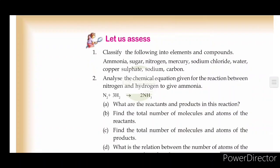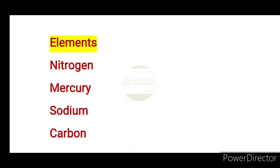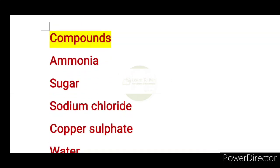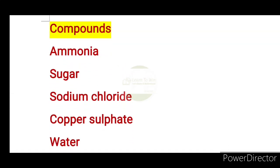We are going to talk about the next class. Classify the following into elements and compounds. Elements are: Nitrogen, Mercury, Sodium, Carbon. Compounds are: Ammonia, Sugar, Sodium Chloride, Copper Sulfate.